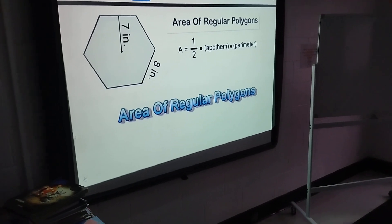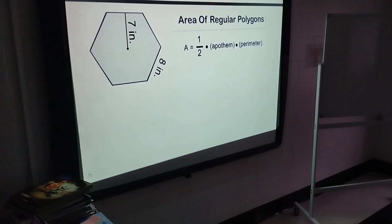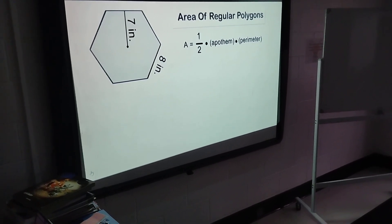For any regular polygon, multiplying one-half by the apothem of the polygon by the perimeter will give us the area of the regular polygon.